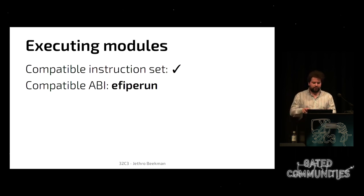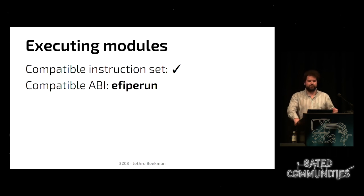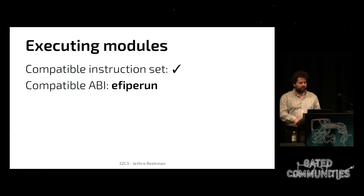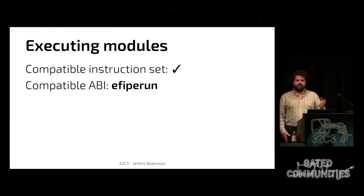These modules are written for the hardware you're currently using with your current operating system, so they have a compatible instruction set. In order to execute them, you just need a compatible application binary interface, or ABI, and this is what I've written with the EFI PE Run tool. You can think of EFI PE Run as Wine for EFI — just like Wine allows you to run Windows applications on Linux, EFI PE Run allows you to run EFI modules on Linux.